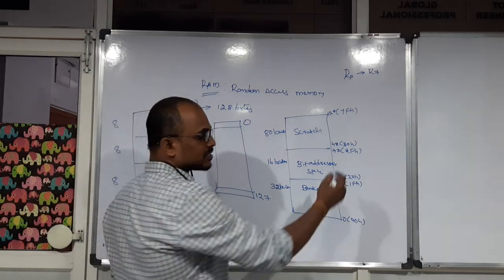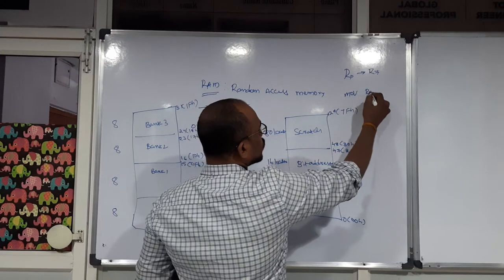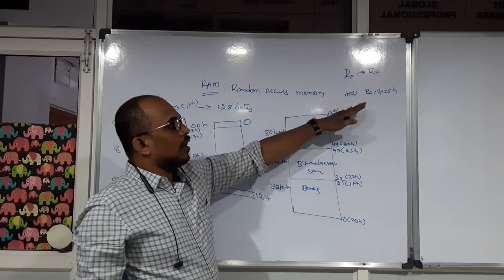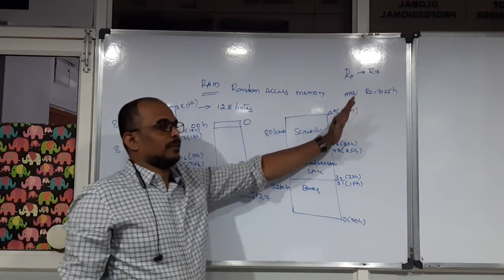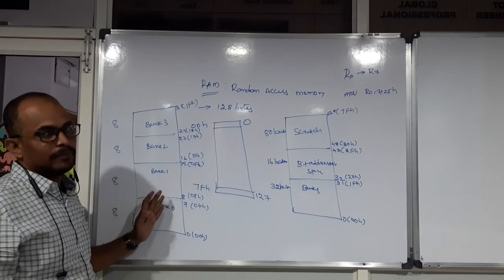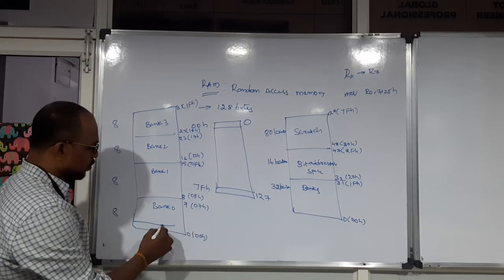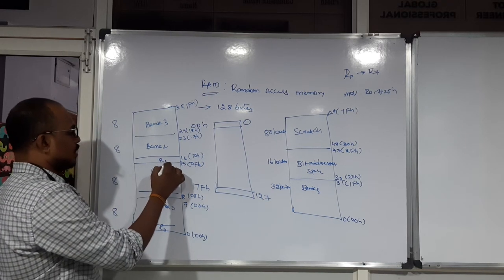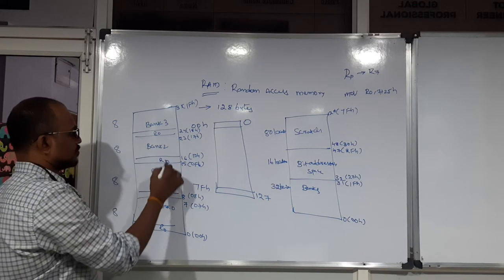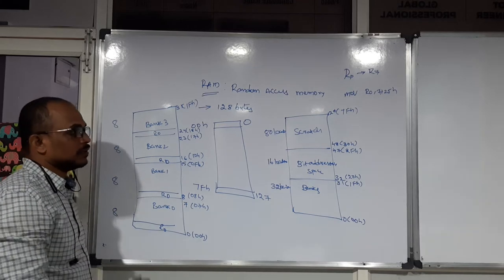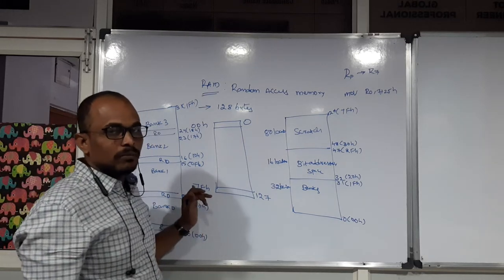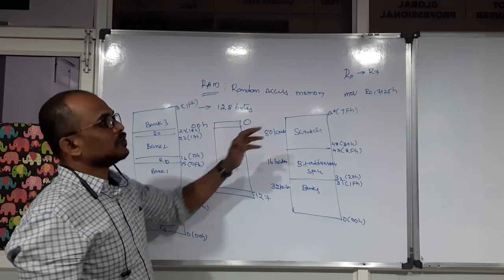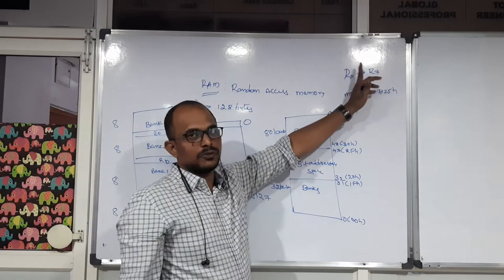If you write a simple instruction such as MOV R0, some value, you need to understand that register R0 is using one temporary memory location from RAM — either the start address of Bank 0, Bank 1, Bank 2, or Bank 3. However, the registers can take only one memory location from the banks at a time; they are not going to use all locations from all banks. There are eight registers, R0 to R7.